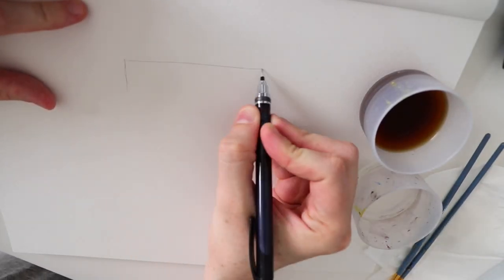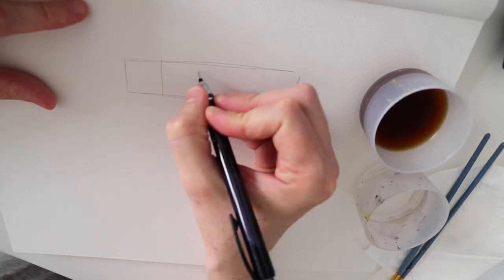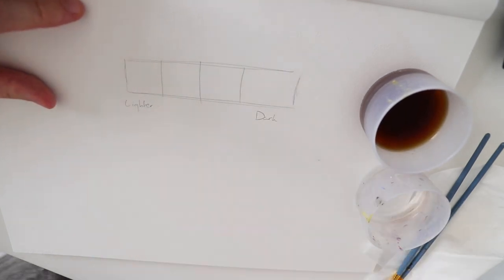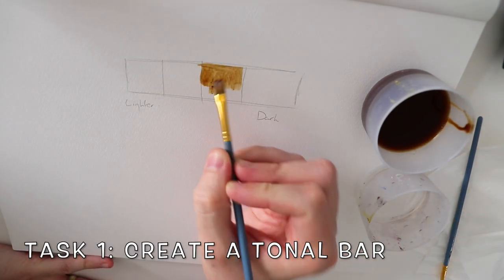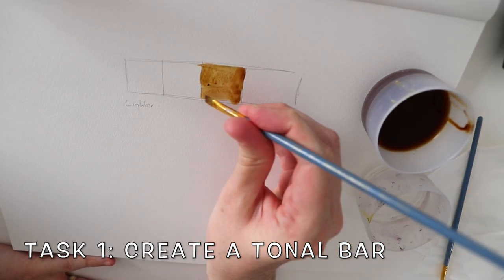Okay now we've got a nice cup of coffee made. The first thing we're going to do is look at putting together a tonal bar moving from dark to light by applying different variances of coffee and mixing water in to start to dilute it.